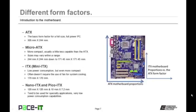The form factor of a motherboard is basically its size, and there are a couple of main categories. There is the ATX — the basic form factor for a full-size, full-power PC — and the ATX size is 305 millimeters by 244. There's also the micro ATX, which is more compact and usually has a little less capability than the ATX. Sizes within the micro ATX may vary within a range — at its largest, 244mm by 244mm, and it can go down to 171.45mm by 171.45mm.